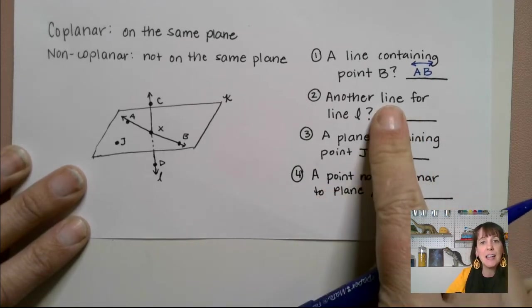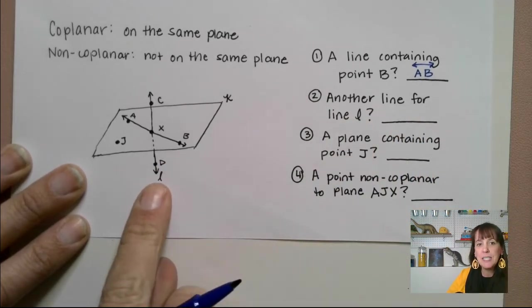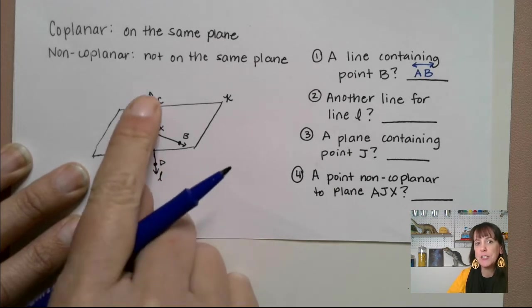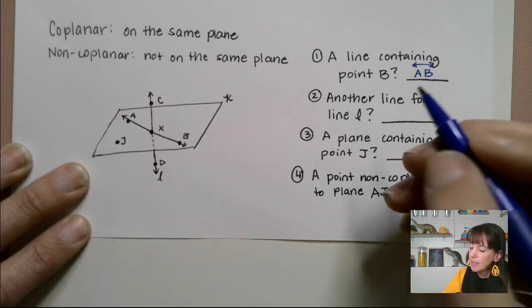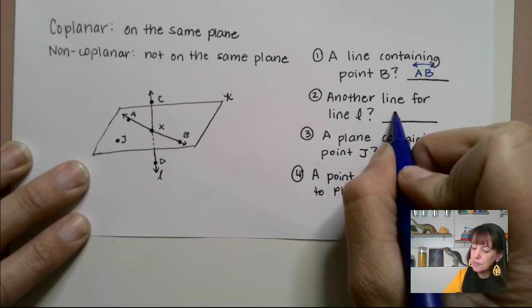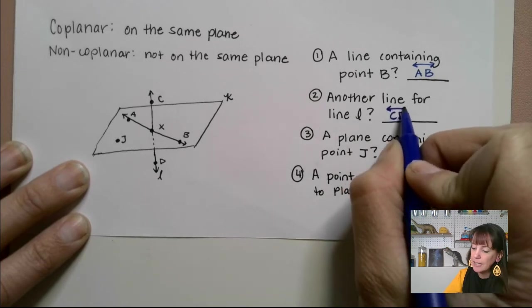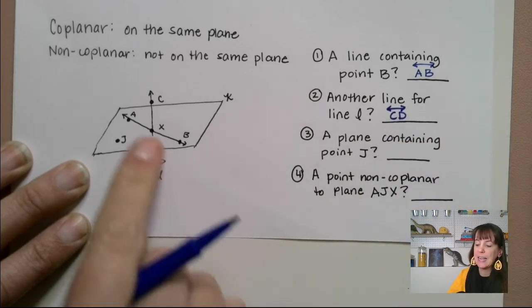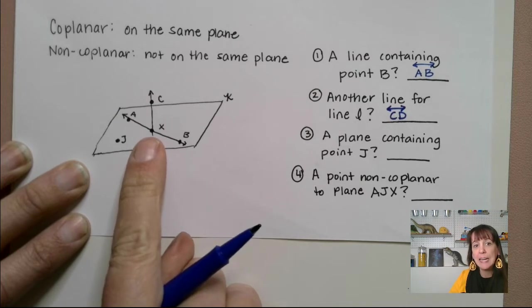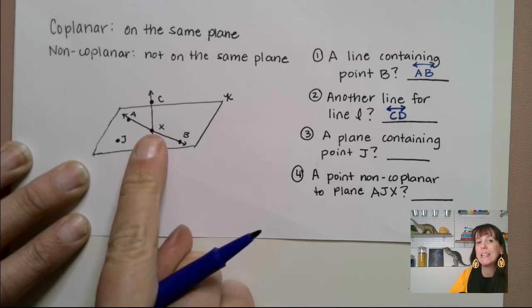Another line for line L. So you see line L is scripted down here. Another way to name that would be line CD. So we could say CD and put our line. Now you notice in this case, a line intersects with a plane at a point, and it is at point X.